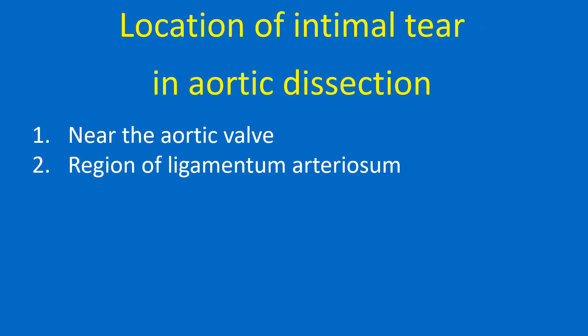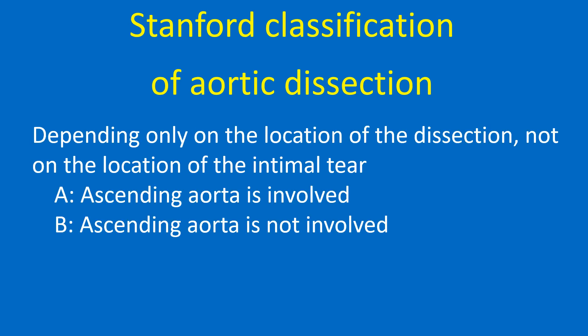The common locations of the intimal tear in aortic dissection are: 1. Near the aortic valve, and 2. The region of the ligamentum arteriosum.